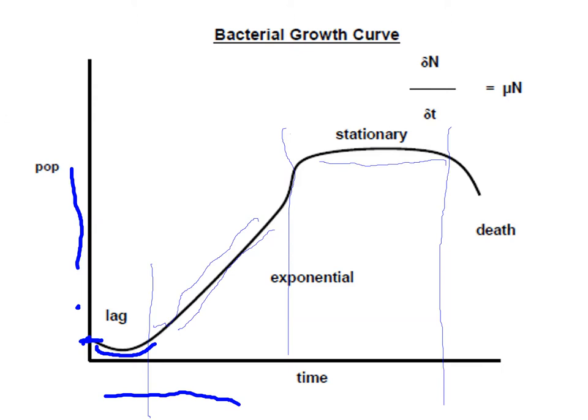During the stationary phase, cells begin to become old and die off, but because the number of newly dividing cells equals the number of dying cells, the graph remains steady. After the stationary phase, if no media is supplemented, the population decreases — this is the death phase, where cells die off due to depleted nutrients or waste buildup. These are the four stages: lag, exponential, stationary, and death.